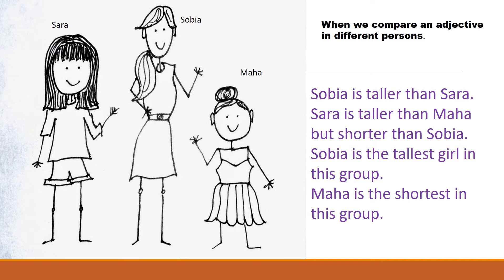Now look at this image. There are 3 girls: Sara, Sobia, and Maha. All three are different in heights. When we compare an adjective across different persons, we will say: Sobia is taller than Sara. Sara is taller than Maha but shorter than Sobia. Sobia is the tallest girl in this group. Maha is the shortest in this group. Here we have used two adjectives — tall and short — with changes by adding -er and -est.